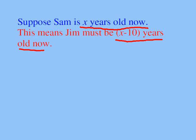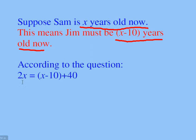According to the question, we are being told that twice Sam's age is 40 years more than Jim's current age. So if you multiply Sam's age by 2, what you get is the same as Jim's current age plus 40. So mathematically, that statement is equivalent to 2x equals x minus 10 plus 40.